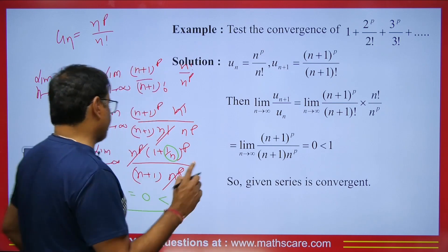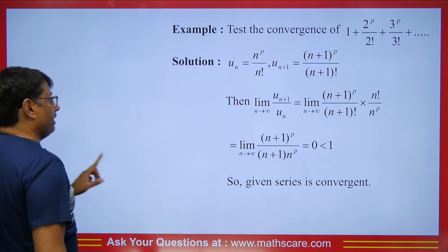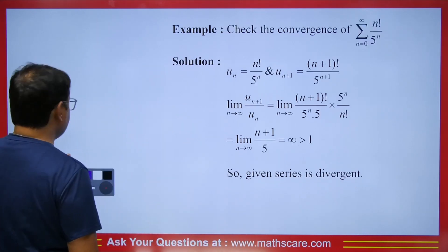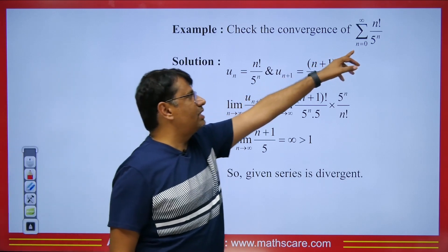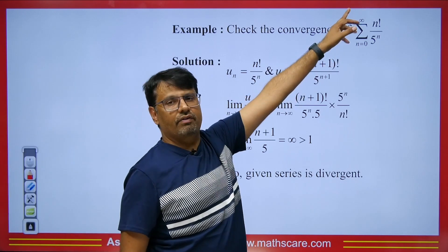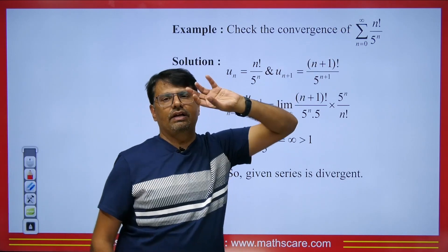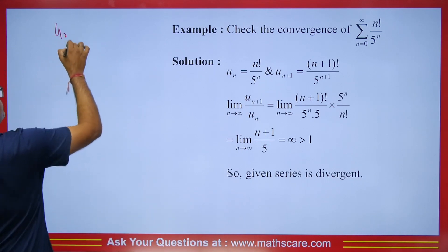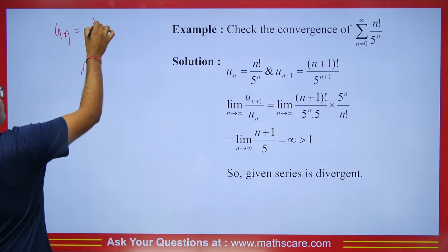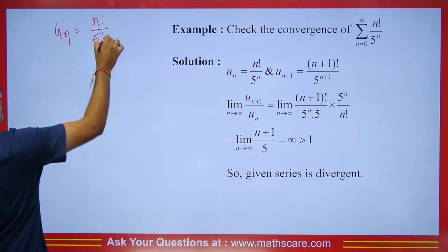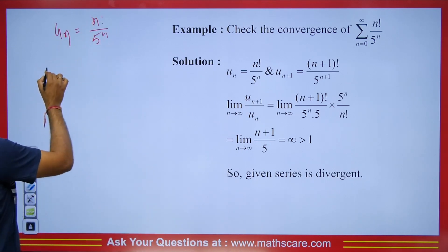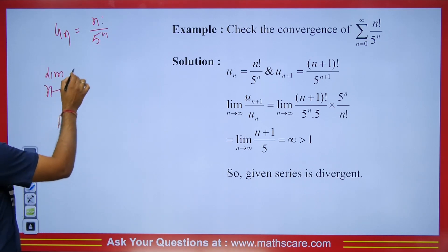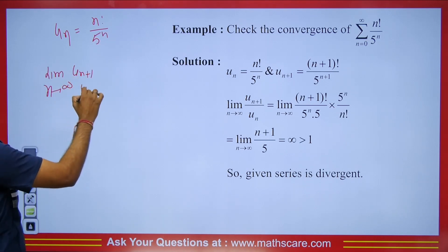It's convergent and you need to keep that in mind. Next question: is the series summation from n=0 to infinity of n! divided by 5^n convergent or not? The nth term is n! upon 5^n. We check the limit n tends to infinity of u_{n+1} upon u_n.